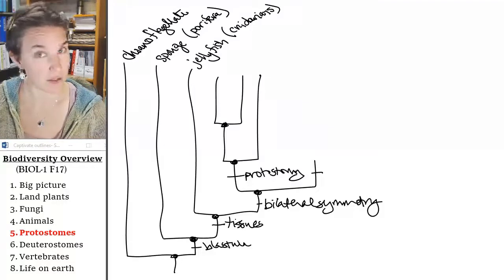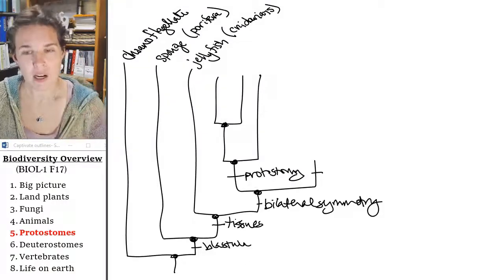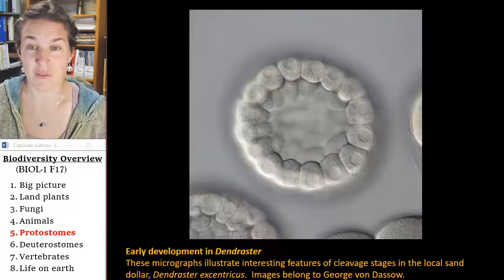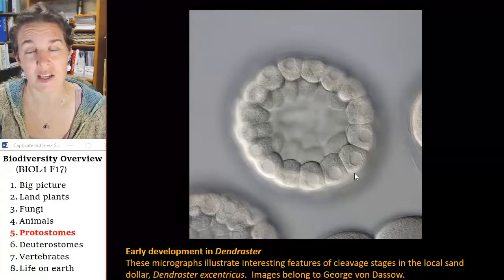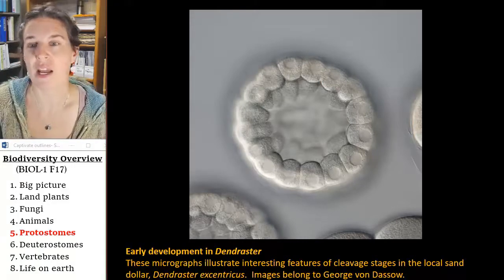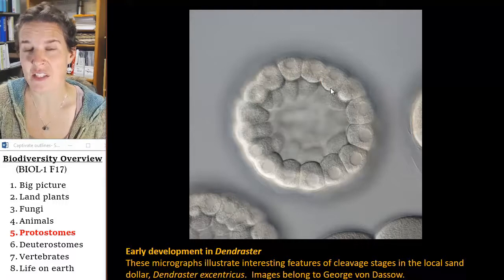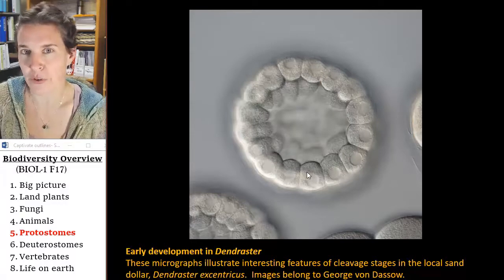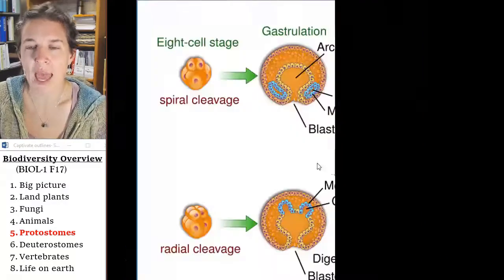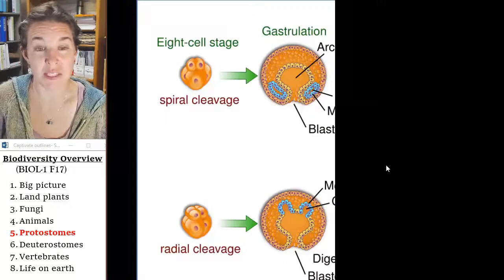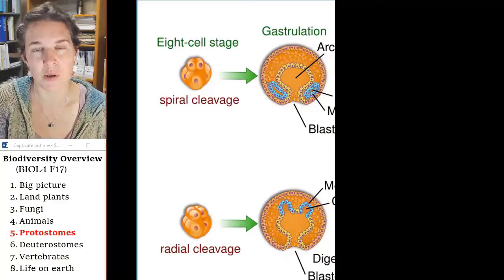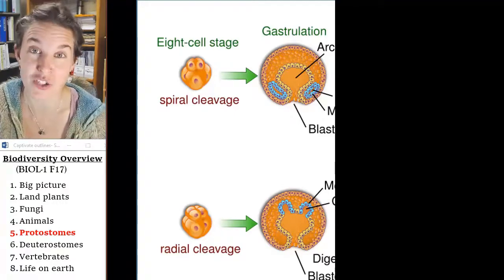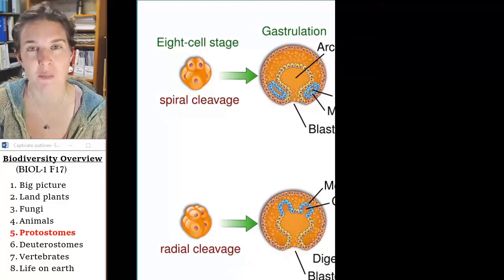So protostome, deuterostome — why are we even talking about this? It goes back to our blastula. If you look at the development of an animal, you can actually tell a lot of things. The blastula changes — you don't look like a blastula anymore, you develop over time. Some of the stages that you go through as an animal are conserved. The more closely related you are to someone, the more likely it is that you went through the same process of development.